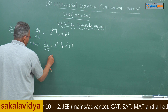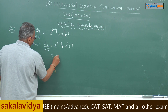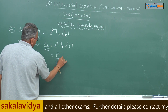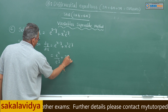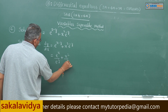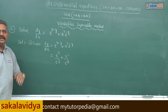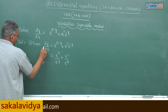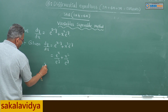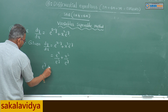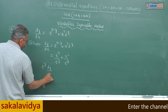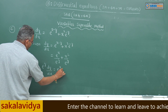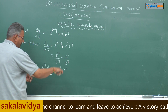Now, this can be written as e^x by e^y plus x squared by e^y. Multiply both sides with e^y. So we get e^y dy/dx equals e^x plus x squared — cross multiply.